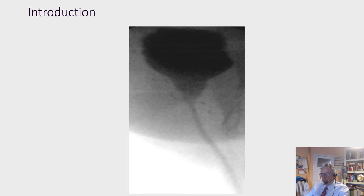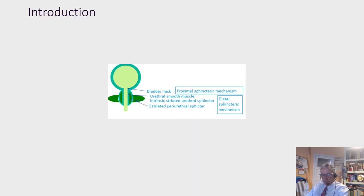Stress urinary incontinence occurs when bladder pressure is higher than urethral pressure. Post-prostatectomy urinary incontinence is due to injury of the urethral sphincteric mechanism.